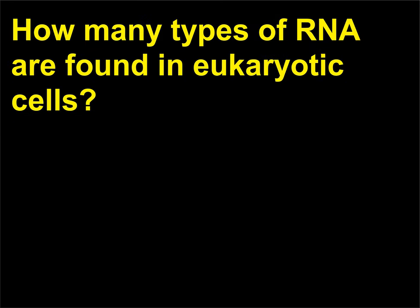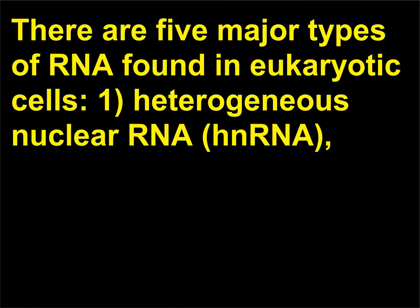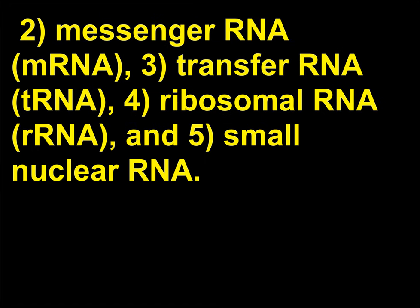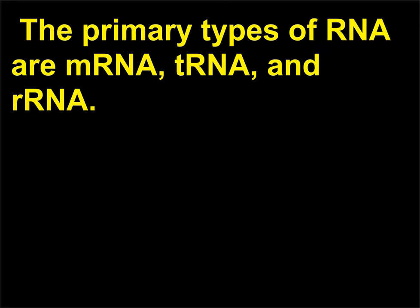How many types of RNA are found in eukaryotic cells? There are five major types of RNA found in eukaryotic cells: 1. Heterogeneous nuclear RNA (hnRNA), 2. Messenger RNA (mRNA), 3. Transfer RNA (tRNA), 4. Ribosomal RNA (rRNA), and 5. Small nuclear RNA. The primary types of RNA are mRNA, tRNA, and rRNA.